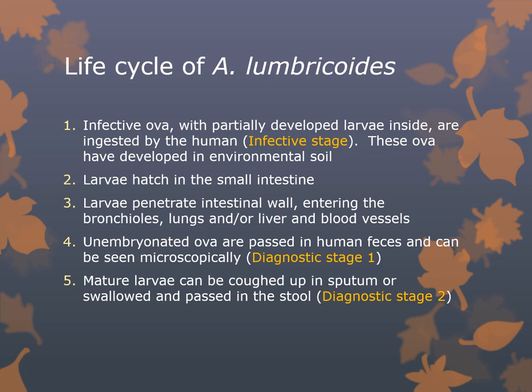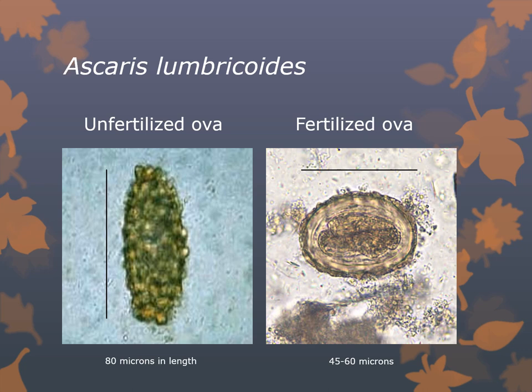The fertilized ova can stay viable in moist soil and 5% formalin for years. Looking at pictures of Ascaris lumbricoides ova: the unfertilized ova is about 80 microns in length, more elliptical in shape, bumpy, yellow or brownish due to bile salts in the gastrointestinal tract. The fertilized ova is more rounded at about 45 to 60 microns in diameter, round or elliptical, and may be thicker when newly fertilized and thinner as it approaches hatching. It stains with iodine and bile salts.